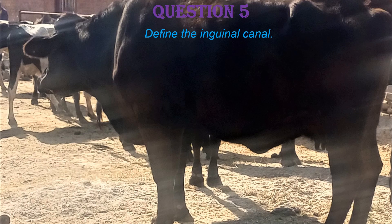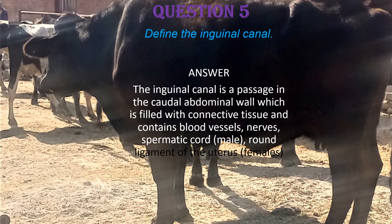Question five: define the inguinal canal. The inguinal canal is a passage in the caudal abdominal wall filled with connective tissue. It contains blood vessels — particularly the testicular artery and testicular vein — and the spermatic cord in males, and the round ligament of the uterus in females. The inguinal canal has two openings: the superficial inguinal ring, marking the external end, and the deep inguinal ring, marking the internal abdominal opening.